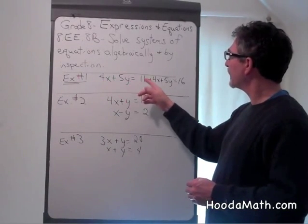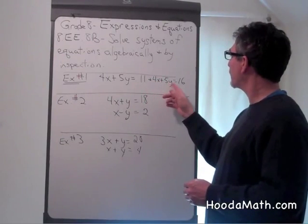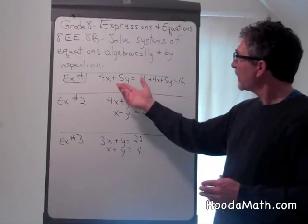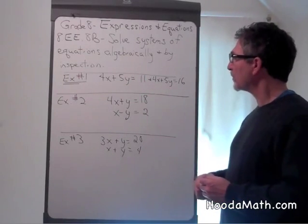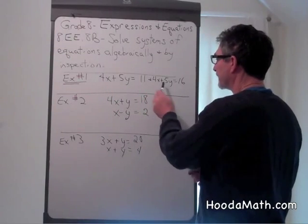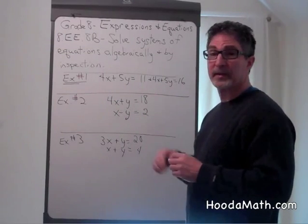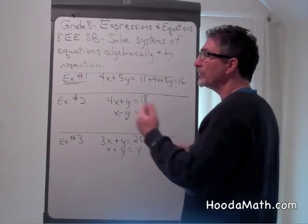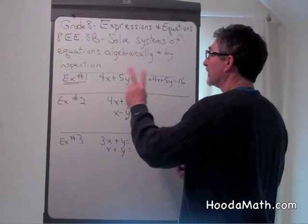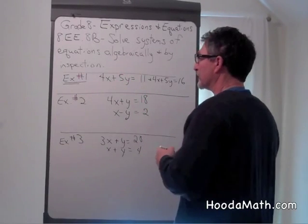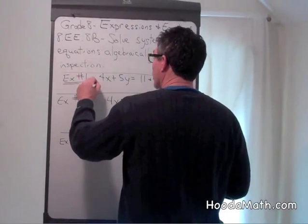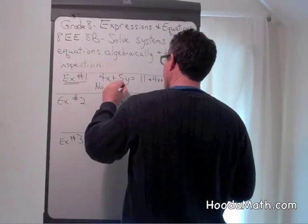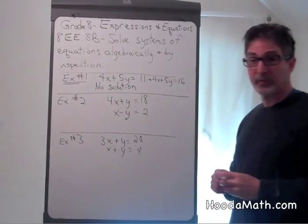4x plus 5y equals 11 and 4x plus 5y equals 16. Now you don't have to go any further. By inspecting these, we're saying that two identical numbers have different sums. So we know that that's impossible. There are no two numbers that if added together will give you different sums. So you say there's no solution, and you don't have to go any further.